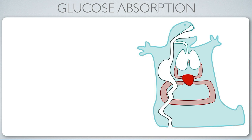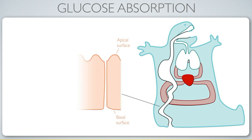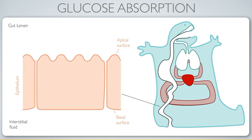Let's focus on a few of the cells in the small intestine. These are the epithelial cells — they have a sort of Bart Simpson-type appearance, and that's because the apical surface has these villi.